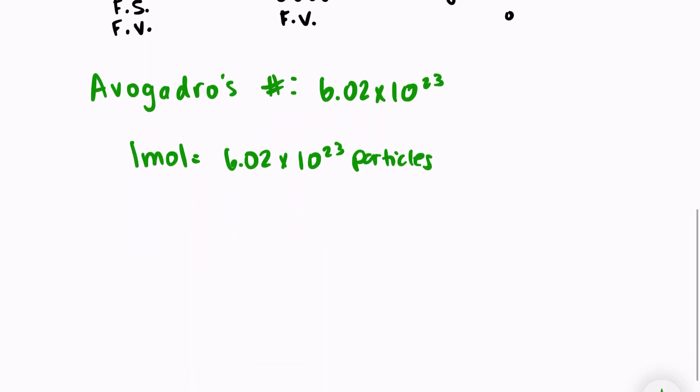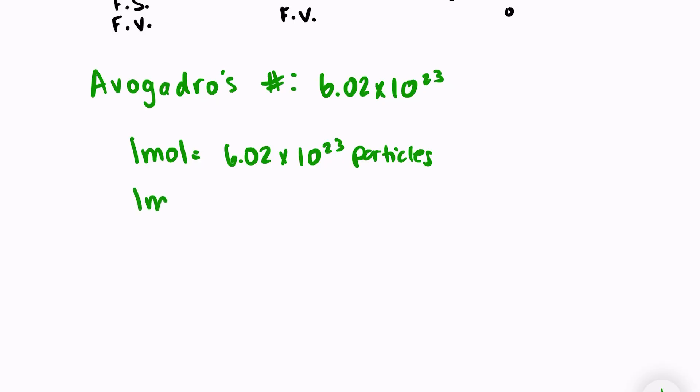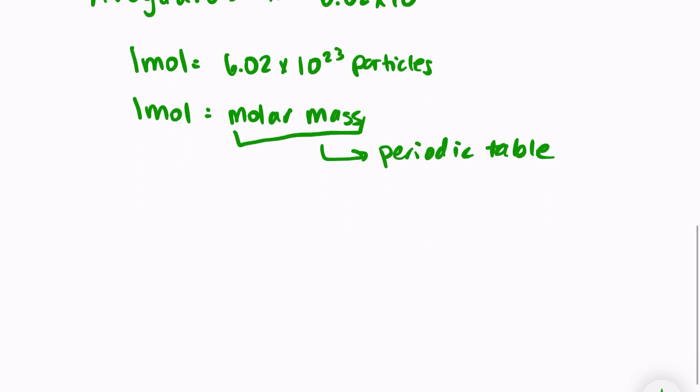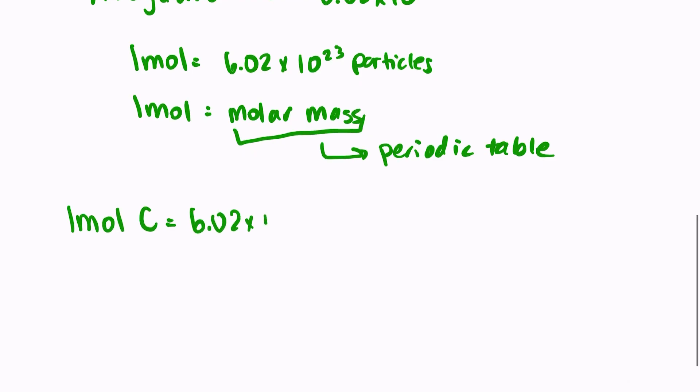One mole is equal to 6.02 times 10 to the 23rd particles. That wouldn't be very useful on its own, but we also know that one mole is equal to the molar mass of a substance, and this mass is found straight on the periodic table. For example, if I wanted to know what one mole of carbon was made up of, I know it has 6.02 times 10 to the 23rd atoms and weighs 12.01 grams based on the periodic table.